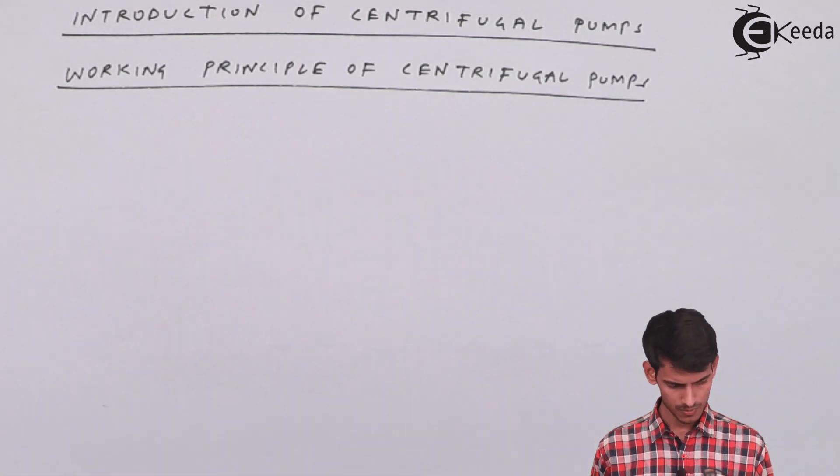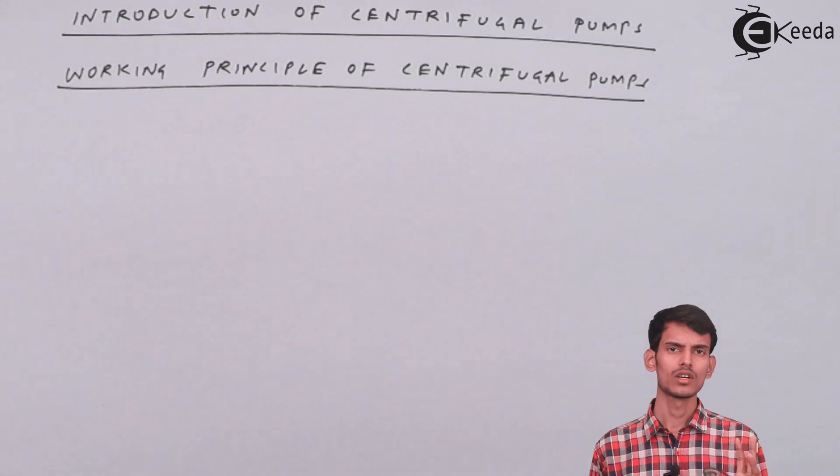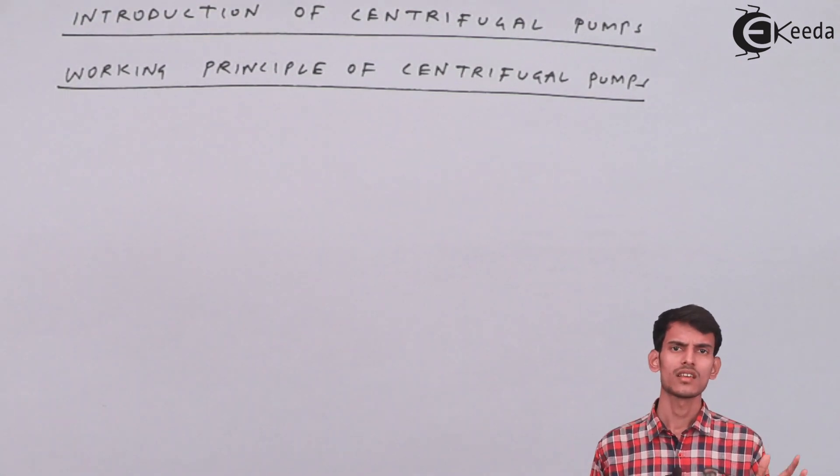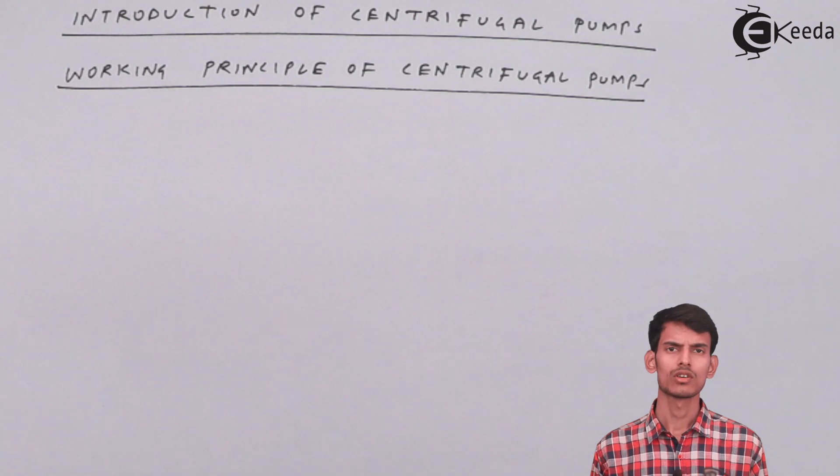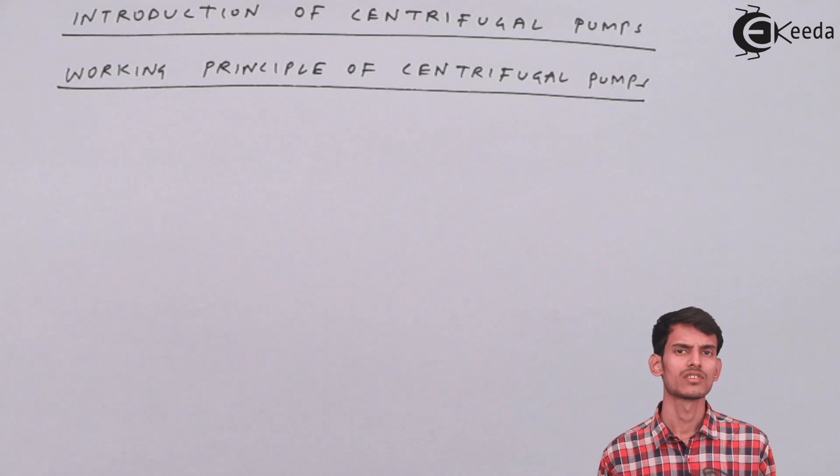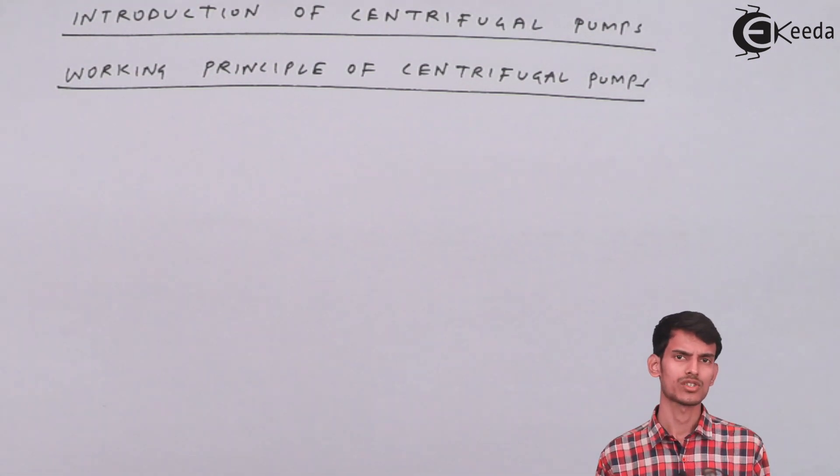So the working principle of centrifugal pumps is very simple. You have a casing similar to turbines, and inside the casing there is an impeller and the impeller is mounted on a shaft which is connected to a motor. The motor rotates the shaft and in turn the impeller rotates. It is having certain RPM, the motor is having certain power. So the impeller gets certain kinetic energy because of the rotation.